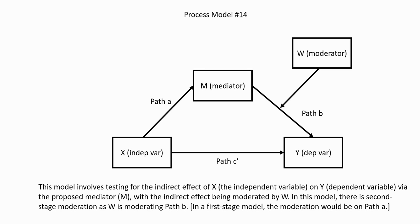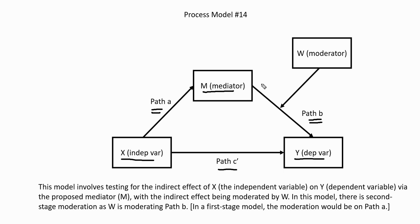Before we open up SPSS and begin running our analysis, let's consider our conceptual model. Process model number 14 essentially lays out a situation where you have mediation taking place with one of the paths being moderated — more specifically, path B. In a standard mediation analysis, you have variable X as the independent variable, variable M as the mediator, and variable Y as the dependent variable, with paths A, B, and C all reflecting direct effects. The indirect effect is computed simply by multiplying the coefficients for paths A and B, and then you can test that indirect effect for statistical significance.